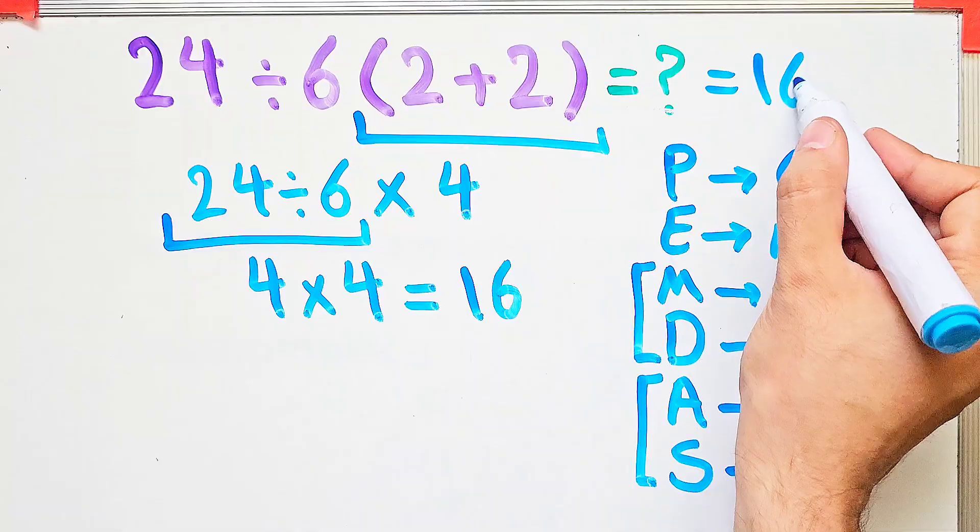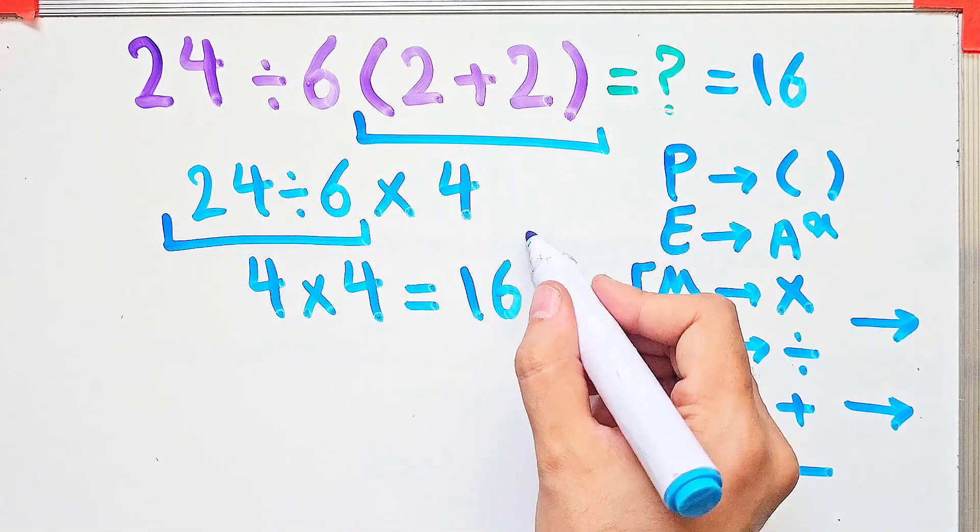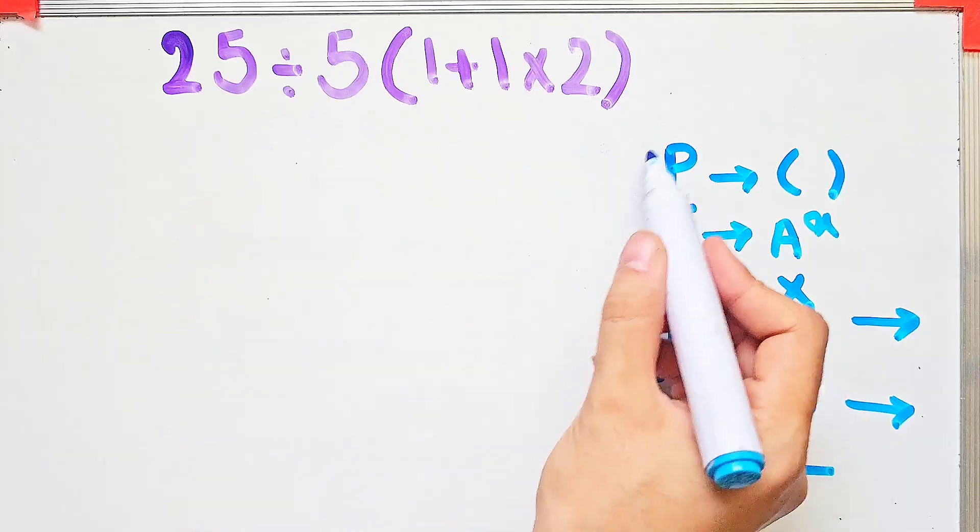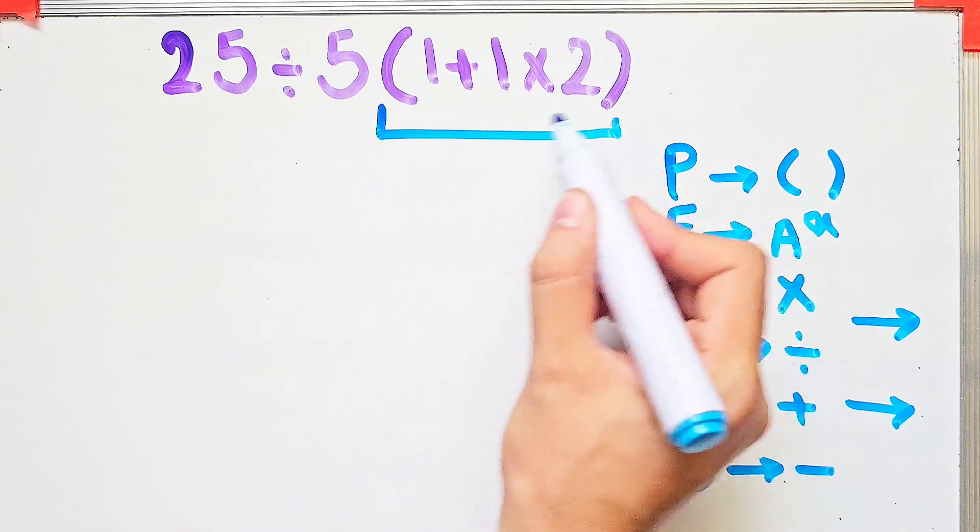Okay guys, if you're ready, let's solve another question about PEMDAS rule. In the new question, we have 25 divided by 5 then times 1 plus 1 then times 2.